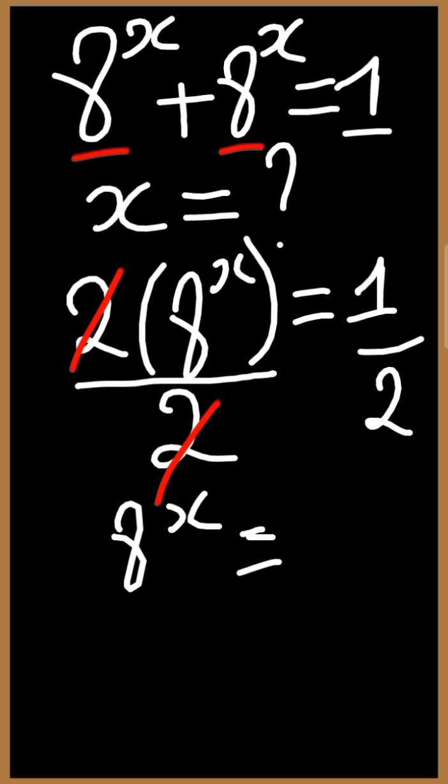We know a half in index form can be expressed as 2 raised to the power negative 1. This will give us 8 in index form with 2 at the base is simply 2 raised to the power 3.